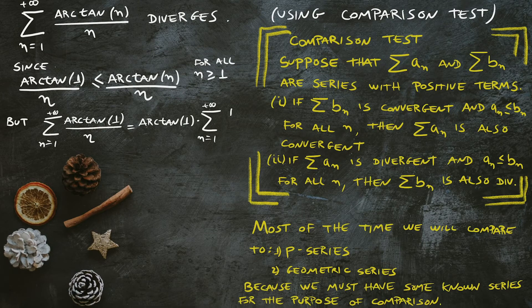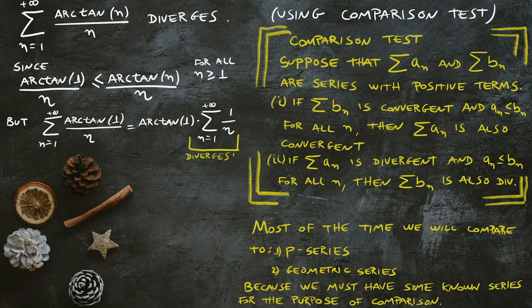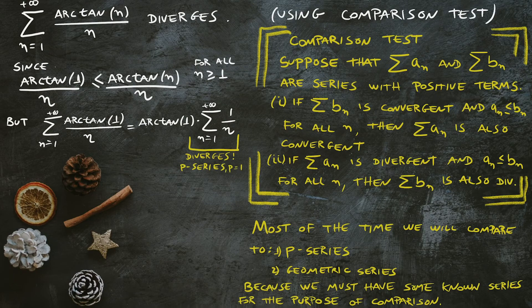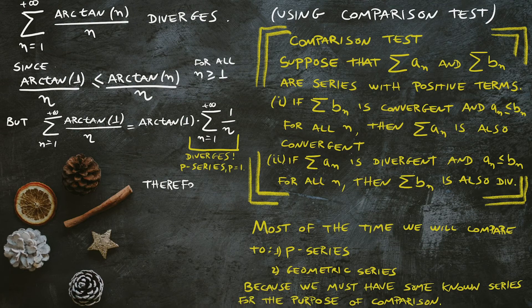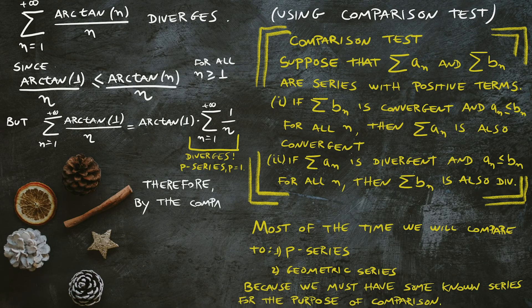Since n ≥ 1, I can divide by n on both sides and keep the same inequality. This series arctan(1)/n equals arctan(1) times the series 1/n.